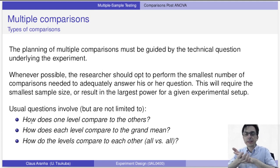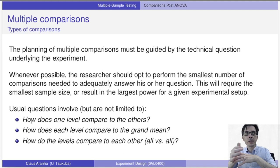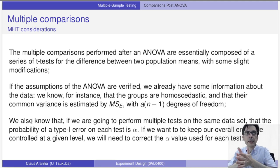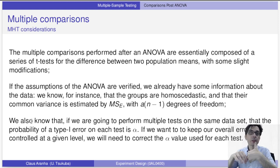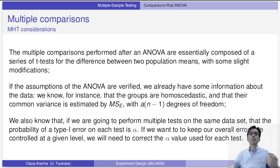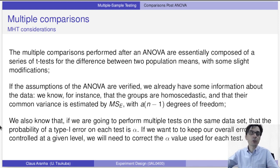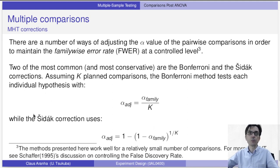When thinking about post-hoc comparisons, in general we want to do the smallest number of comparisons needed: how one level compares to the others, how each level compares to the grand mean, or how all levels compare to each other. One way is to do multiple comparisons after ANOVA confirms at least one level differs, using one versus all, or all versus all. We can increase confidence by the number of repetitions, and to reduce the chance of type 1 error we use an adjusted alpha value.